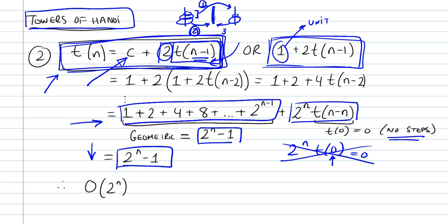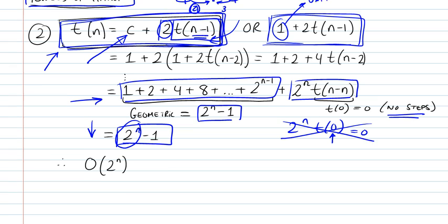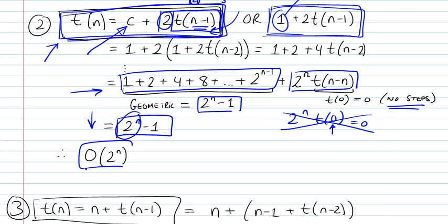So we end up with this. The recurrence relationship boils down to this relationship, and looking at it closely, we realize that it's 2 to the n. It grows with 2 to the n. So our Towers of Hanoi algorithm is big O of 2 to the n.